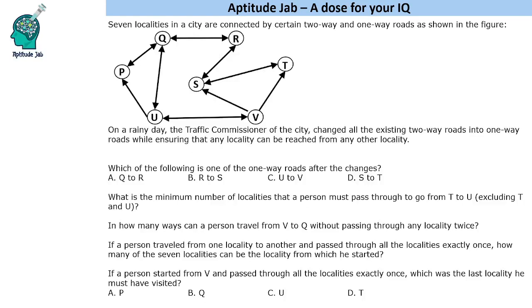Hello everyone, welcome to Aptitude Jab. This is a set based on routes. It says that there are 7 localities in a city that are connected by certain 2-way and 1-way roads as shown in the figure.